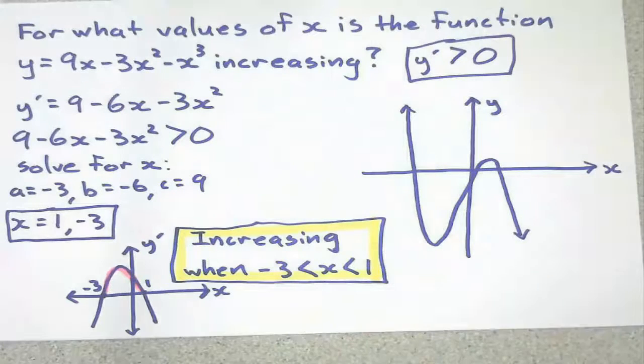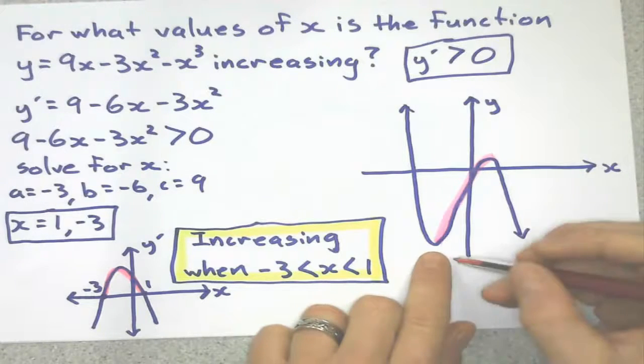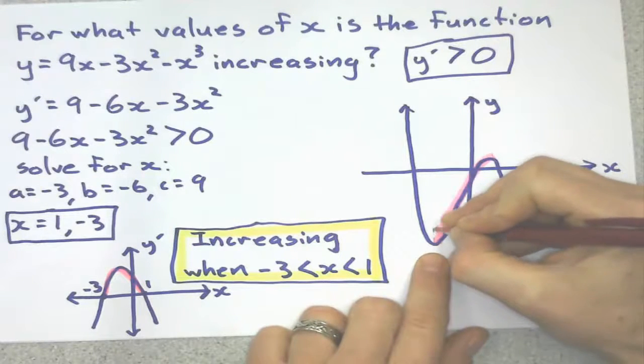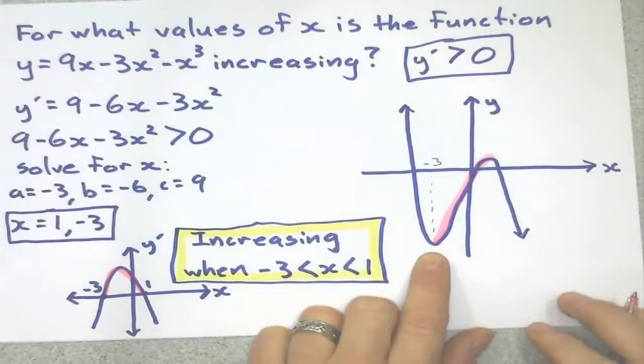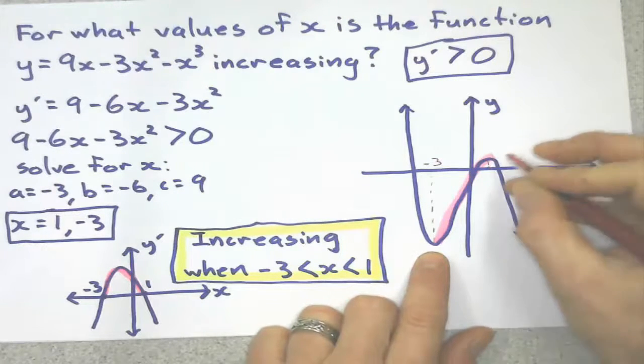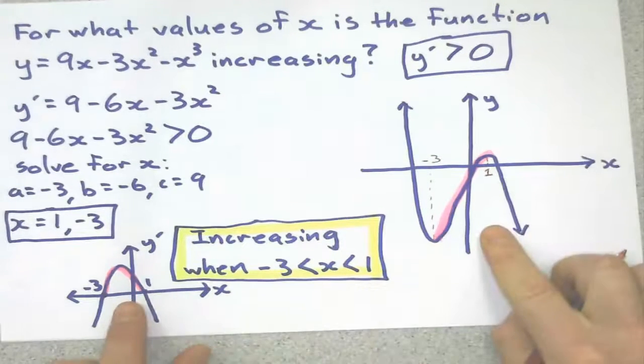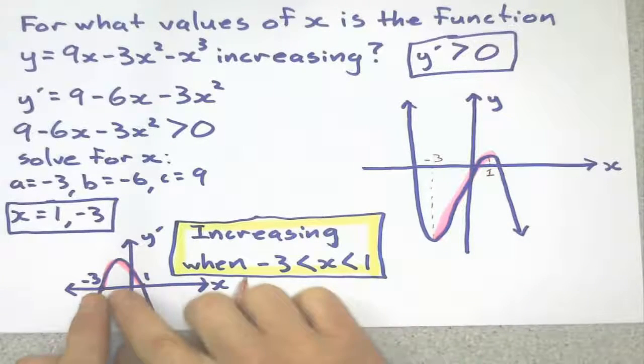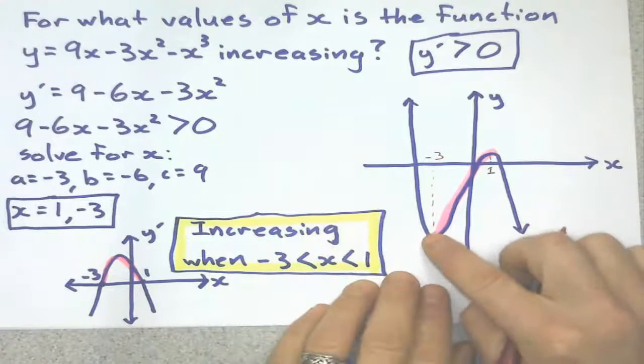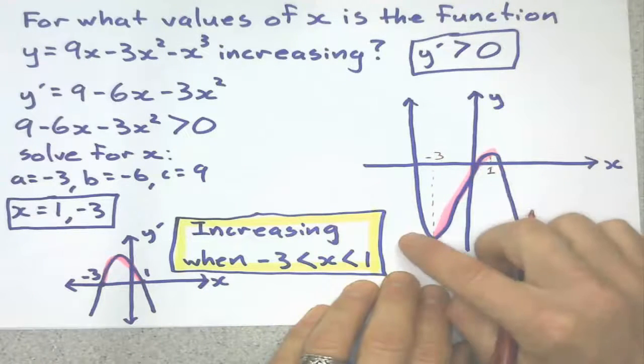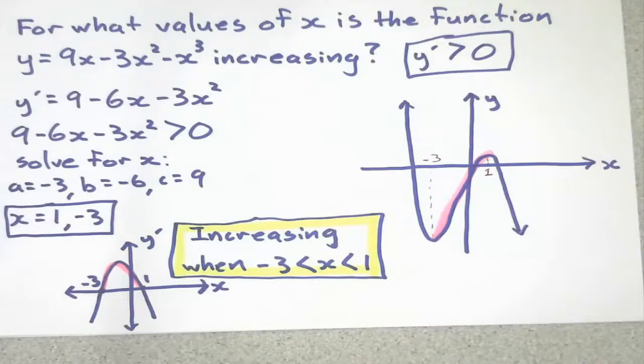The graph is, this cubic here is increasing here. That's where it's increasing. What are these values? That value is going to be negative 3, and that value is going to be positive 1. That's the relationship. I used a parabola to solve it, which shows the gradient. And this is the actual function, where that is where the graph is increasing because that's the part that has a positive gradient in it.